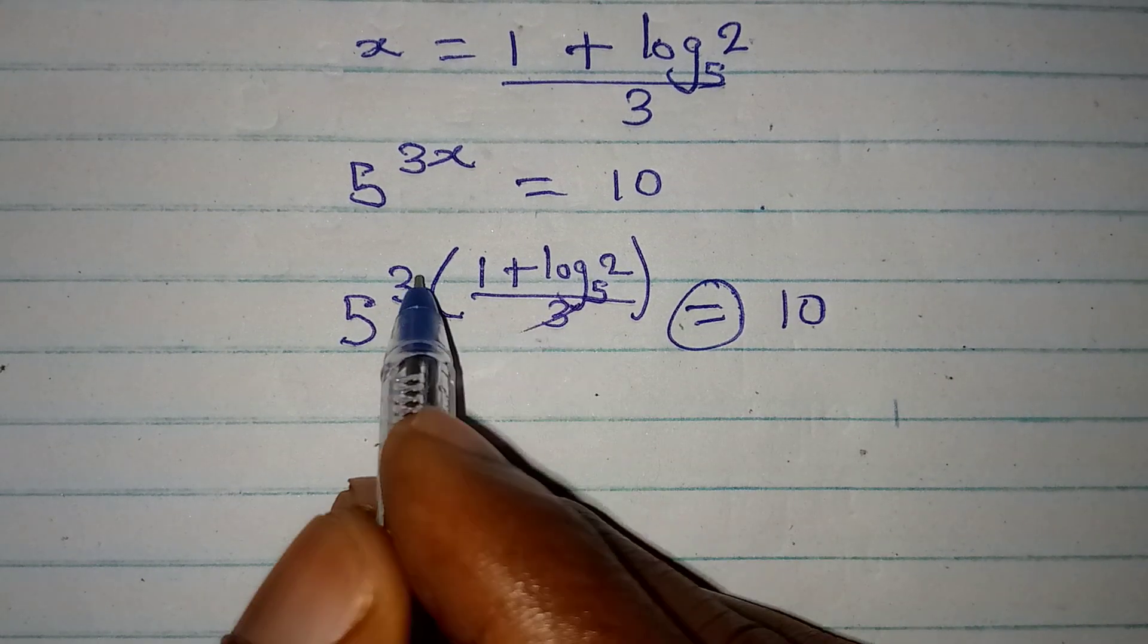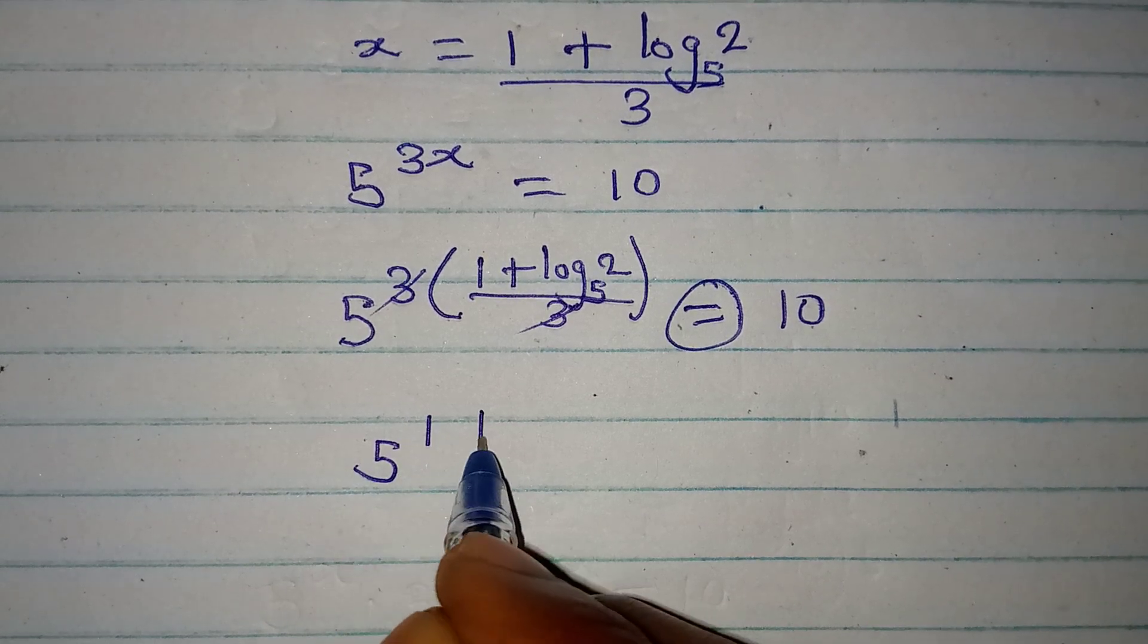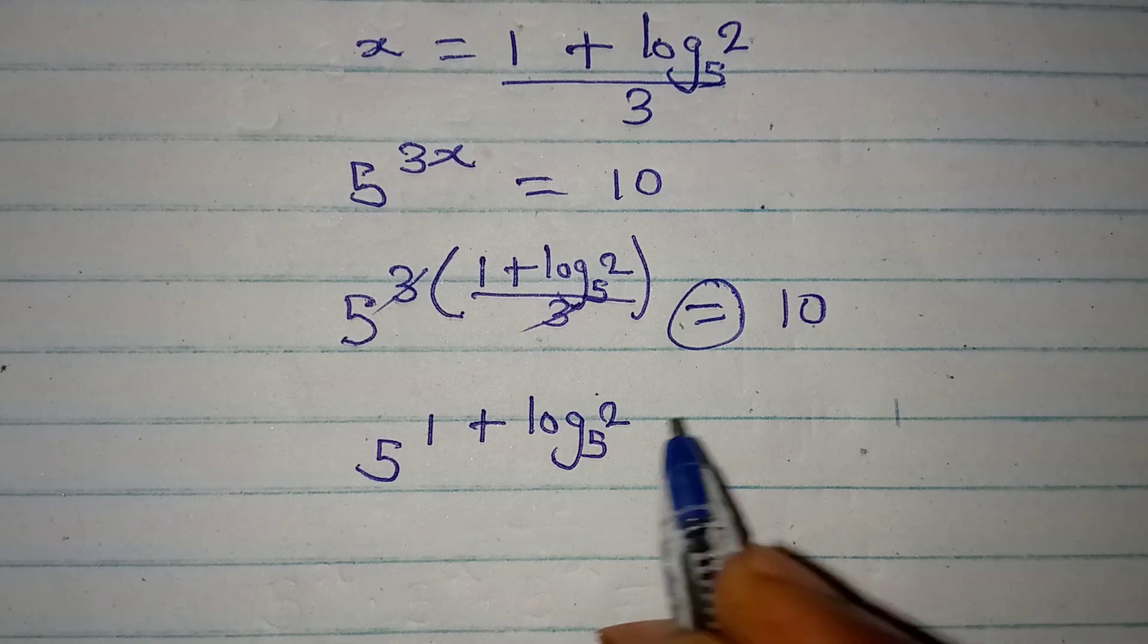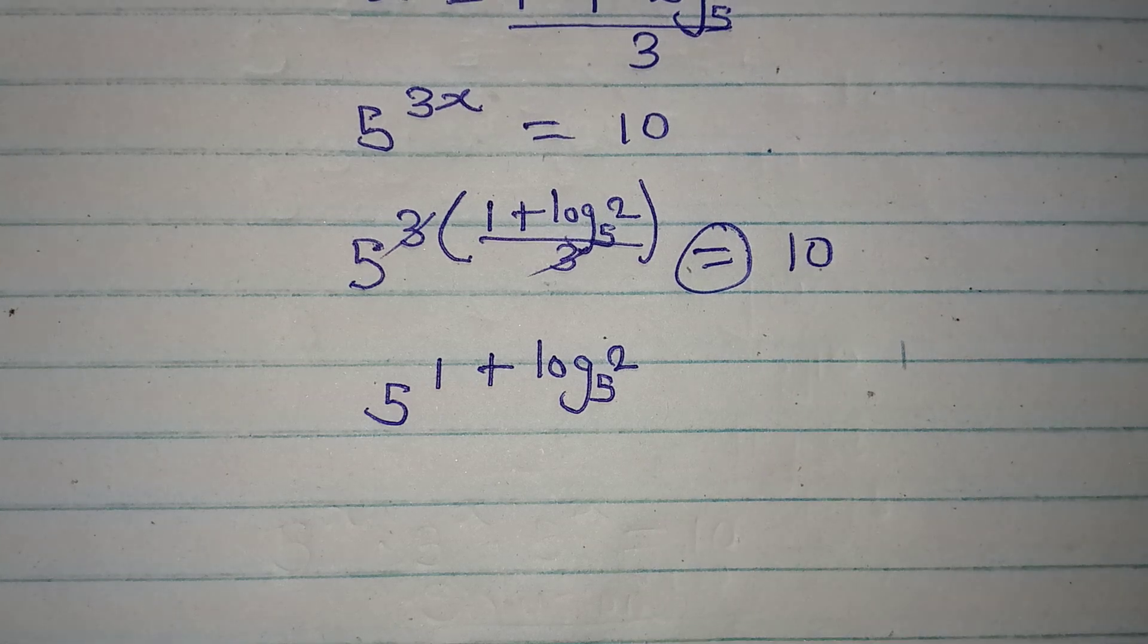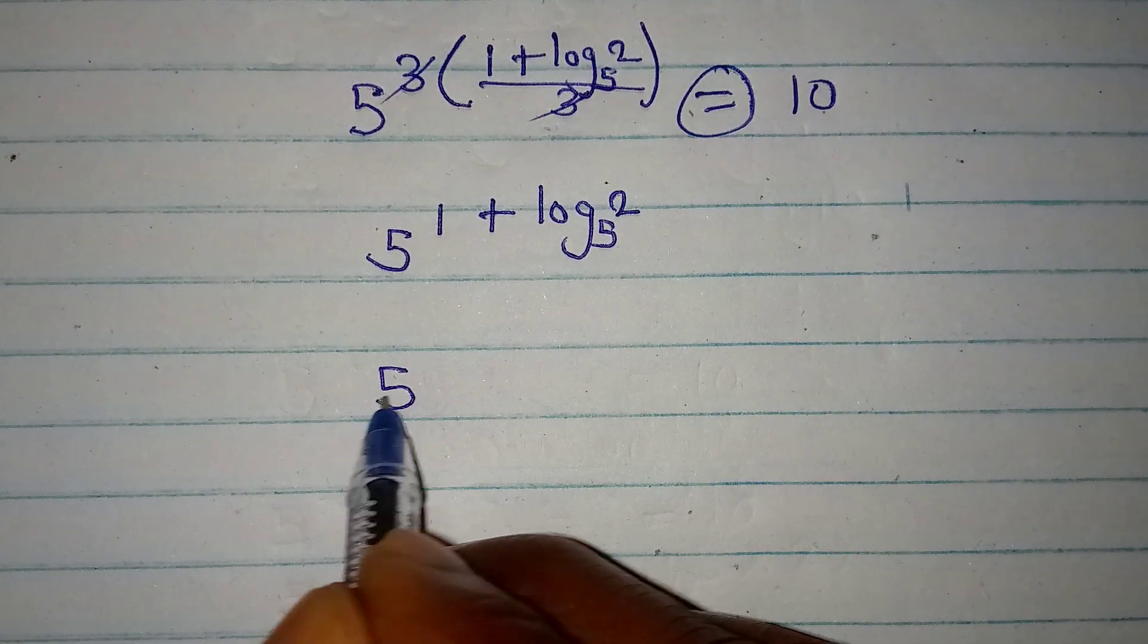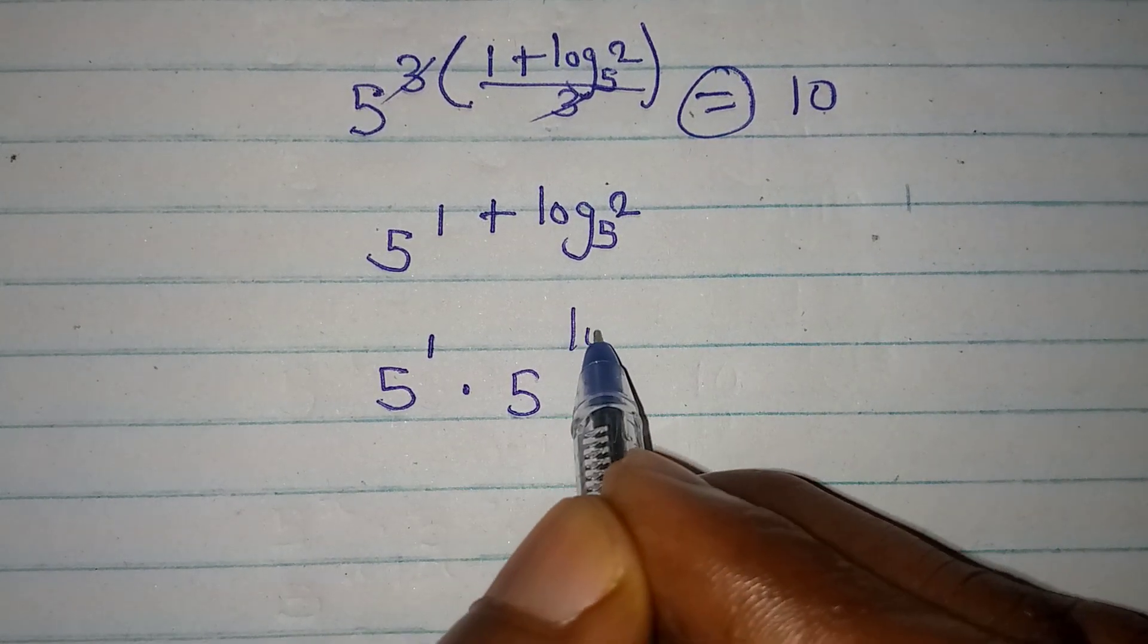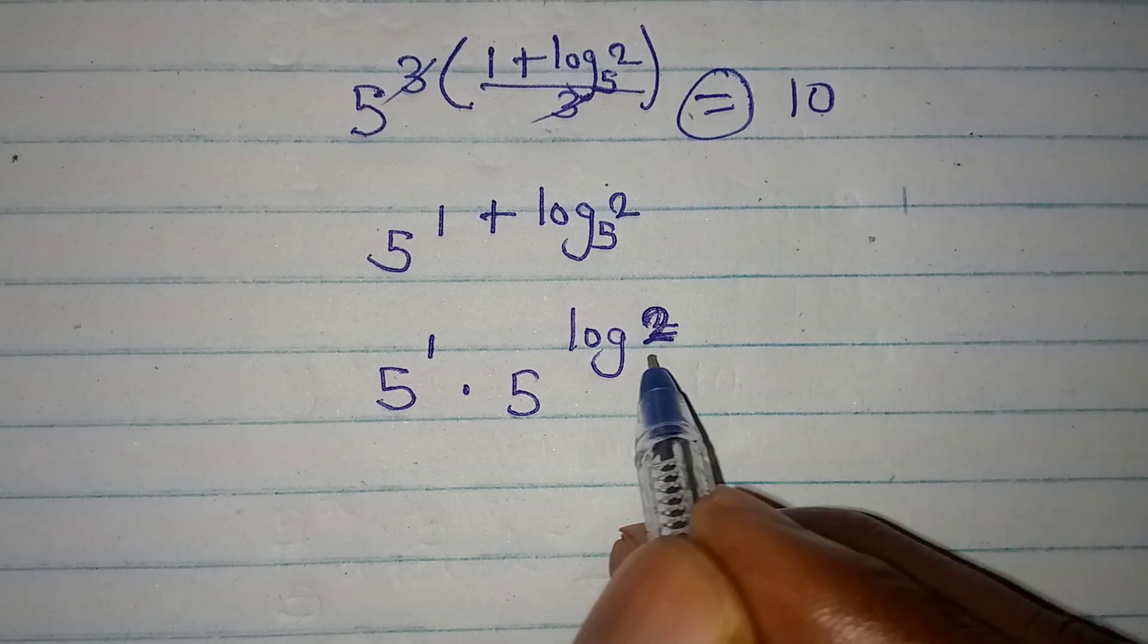So, that we have 5 to the power of 1 plus log 2 to the base of 5. We are still trying to check if this will give us 10. Now, do you know that this is the same thing as 5 to the power of 1 multiplied by 5 to the power of log 2 to base 5. Do you know that these are the same thing? Yes, they are the same thing.